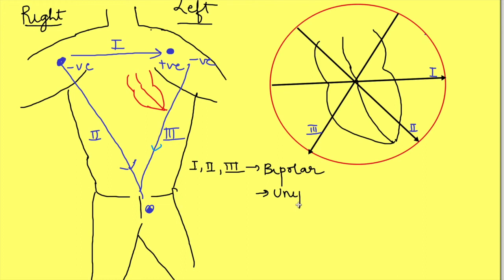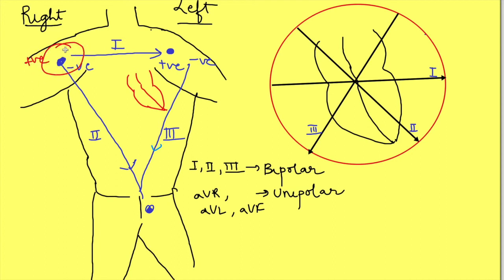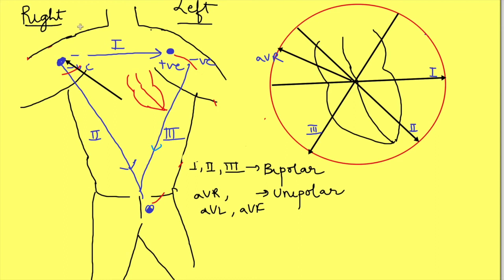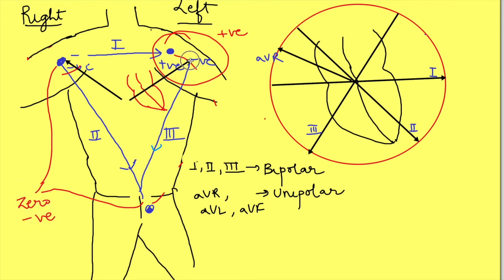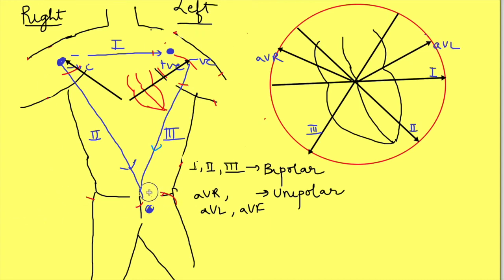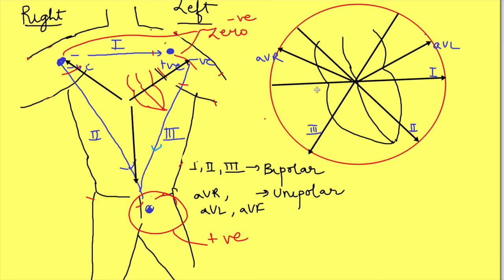There are three unipolar limb leads: AVR, AVL, and AVF. For these leads, the electrode at one location is considered the positive electrode, while electrodes at the other two places are passed through high resistance such that their potential becomes zero, acting as the negative electrode. For AVR, the right arm electrode is positive and the left arm and left leg are the zero-potential negative. For AVL, the left arm electrode is positive. For AVF, the left leg electrode is positive, with the other two made zero. The direction of each lead is determined accordingly.